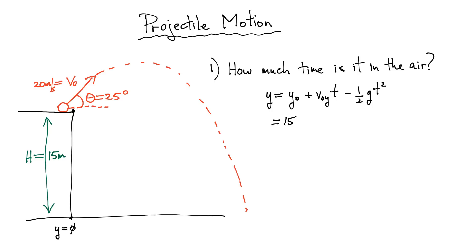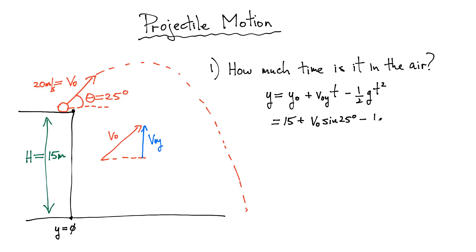The next term is the initial velocity, but it's only the initial velocity in the vertical direction. If you have a general velocity at some angle V-zero, the vertical component is the y-direction initial velocity. For this problem, that's simply V-zero — the hypotenuse — multiplied by sine of 25 degrees. Then again, minus one-half little g t squared. My final position is when the projectile is down at the bottom, so that term is zero.